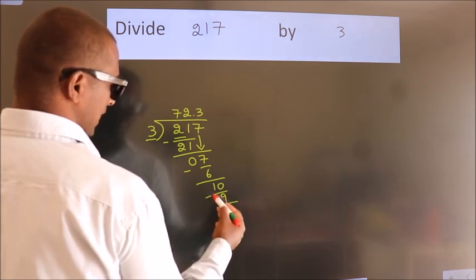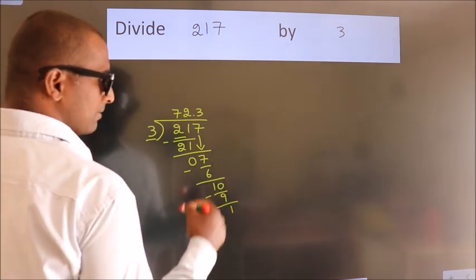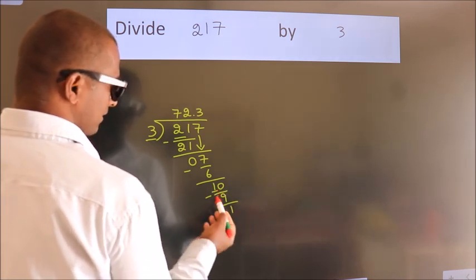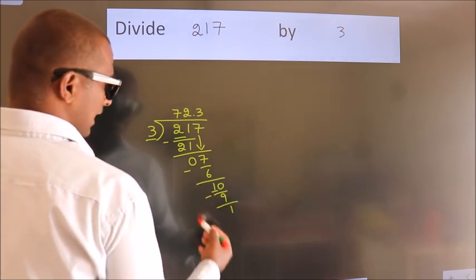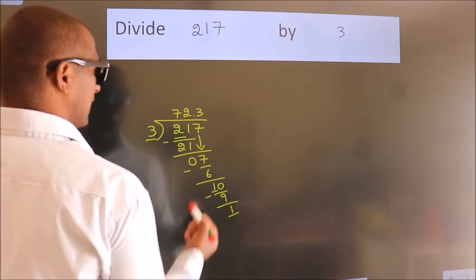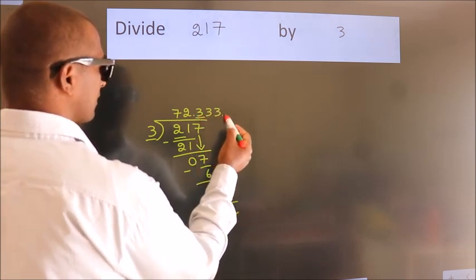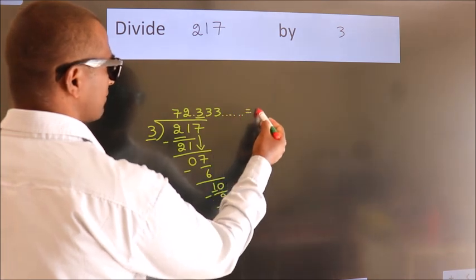Now we subtract. We get 1. Now you observe. We had 1 here, and we got 1 again. That means this number keeps on repeating. So this is our quotient.